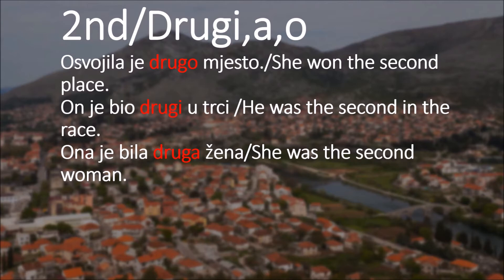The last example: ona je bila druga žena - she was a second woman. Our subject is ona, and we have žena following it. Both of them are feminine. Therefore, we're using druga.